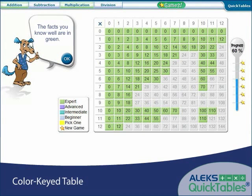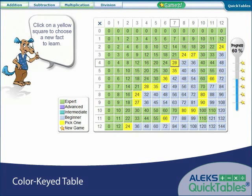Following the initial assessment, students receive a color-keyed table. In the table, colors correspond to a level of mastery for each math fact. Yellow facts are facts that the student can choose to work on.